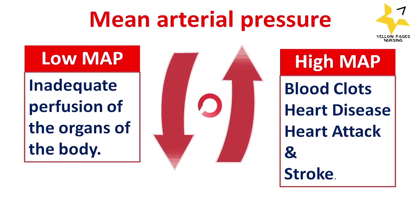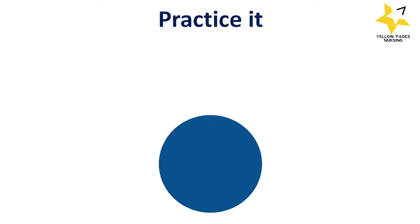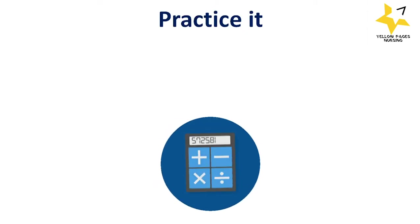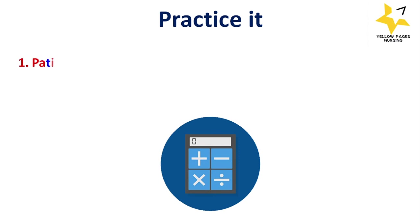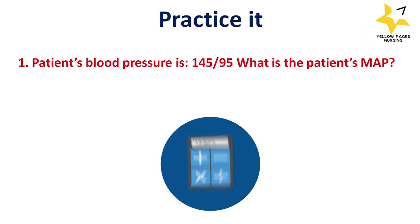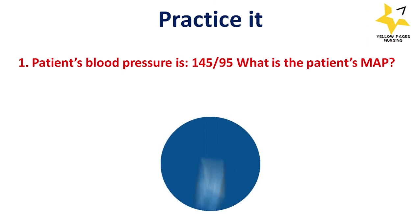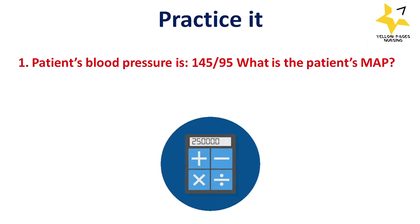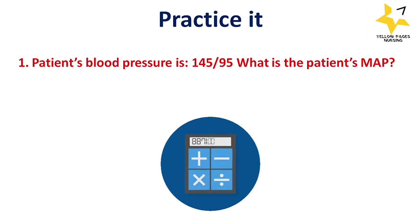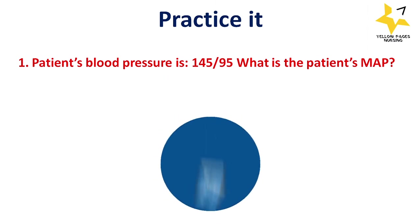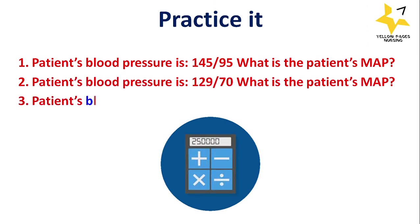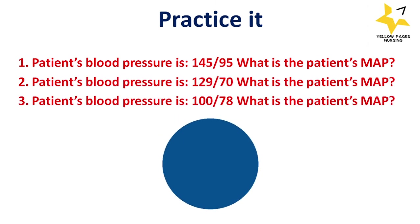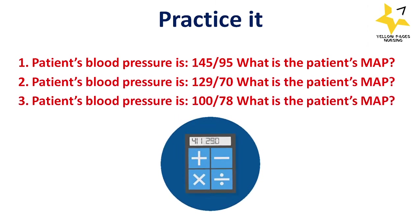Here are some practice examples. First: a patient's blood pressure is 145/95 — what is the patient's MAP? Second: a patient's blood pressure is 129/70 — what is the MAP? Third: a patient's blood pressure is 178/? — what is the patient's MAP? You can comment your answers in the comment section.